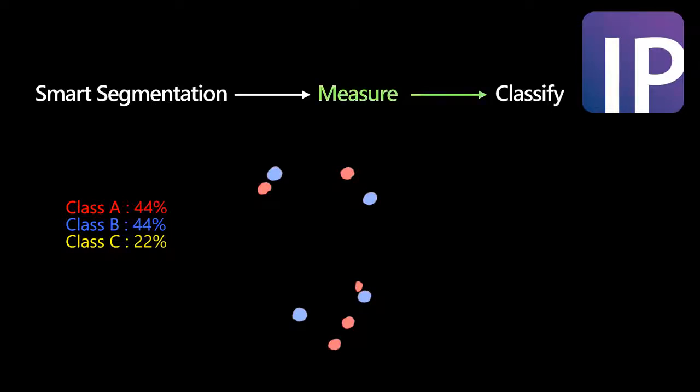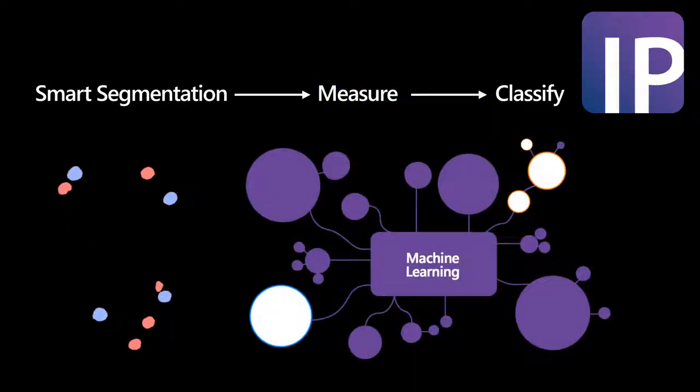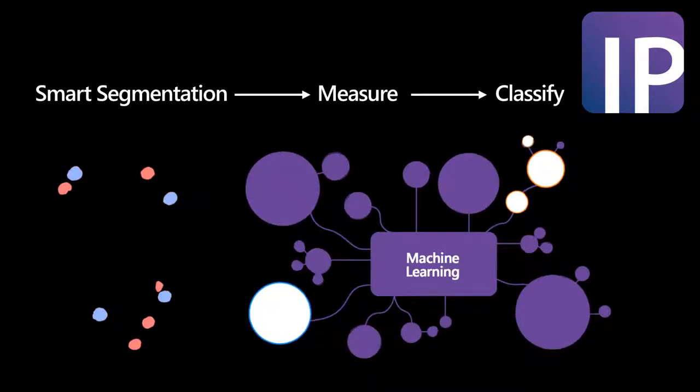ImagePro will auto-classify objects based on a measurement or several measurements from the previous stage. Learning classification, a machine learning based method, can isolate populations of objects based on small morphometric or intensity differences to correctly assign and classify the objects.